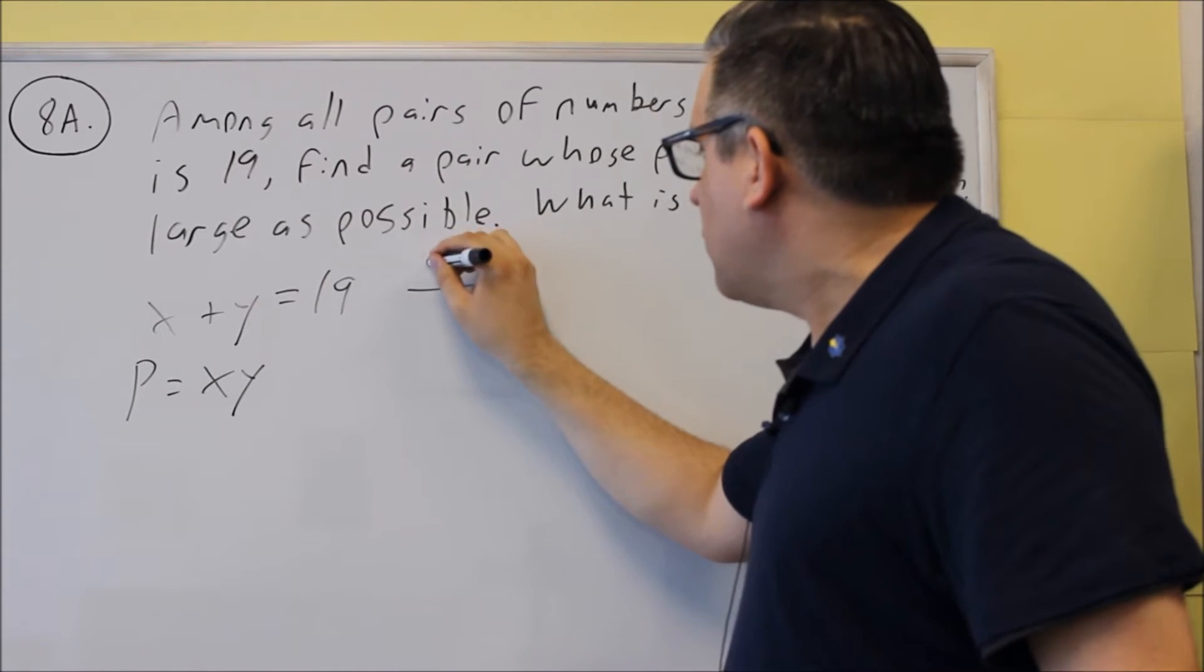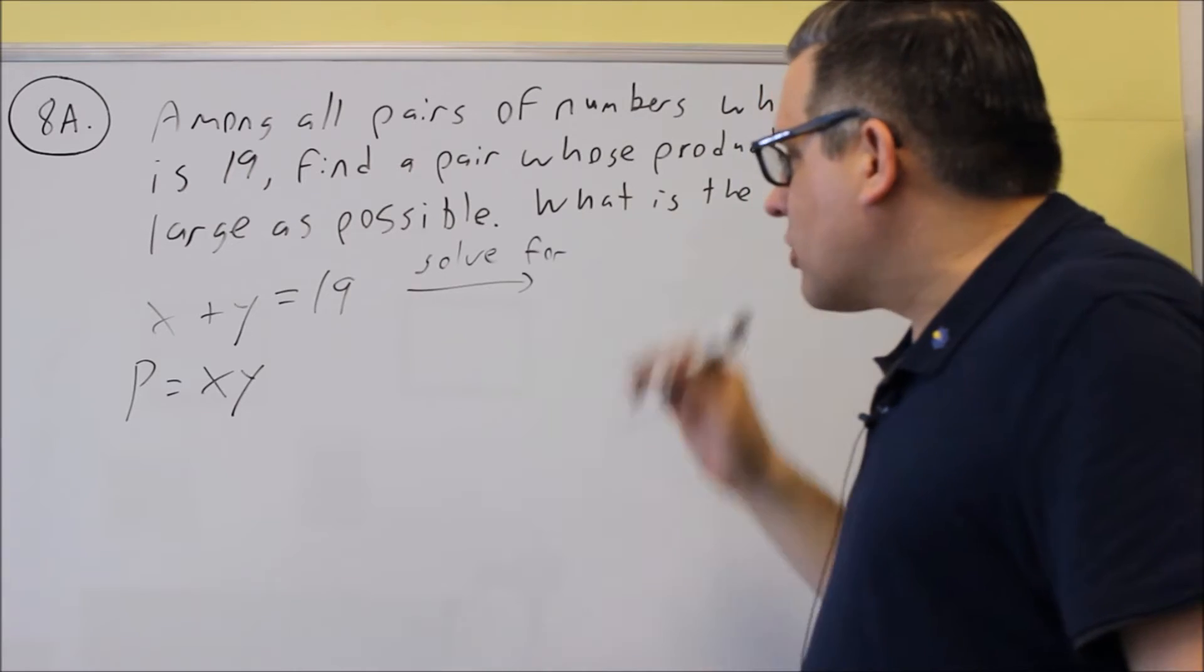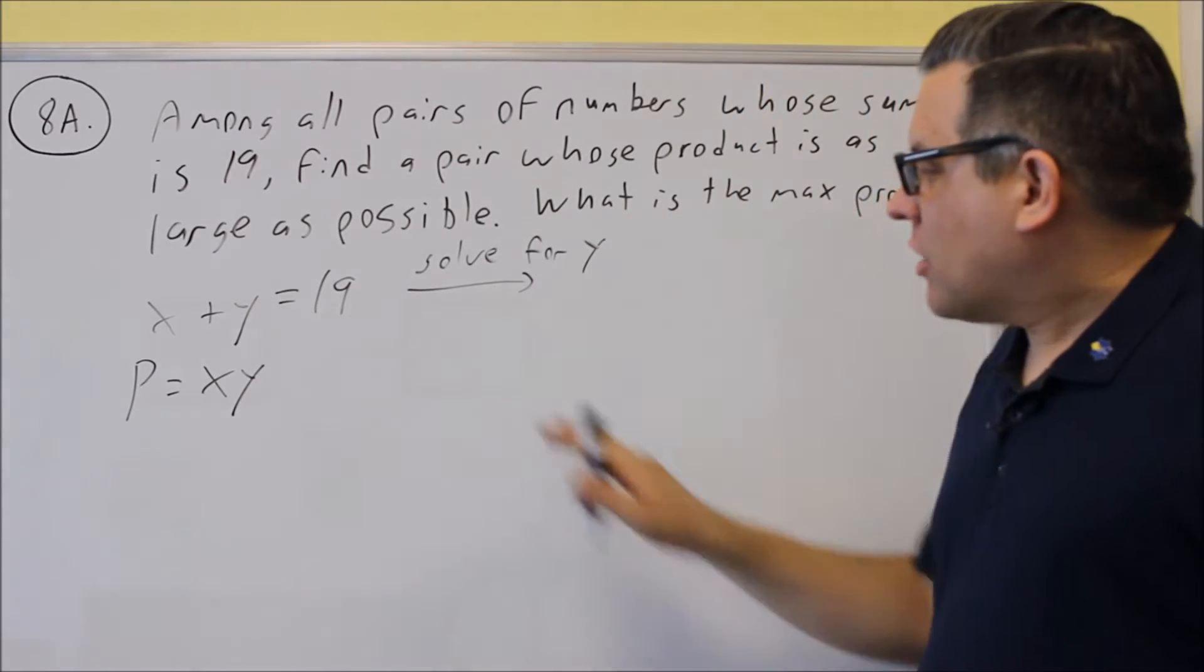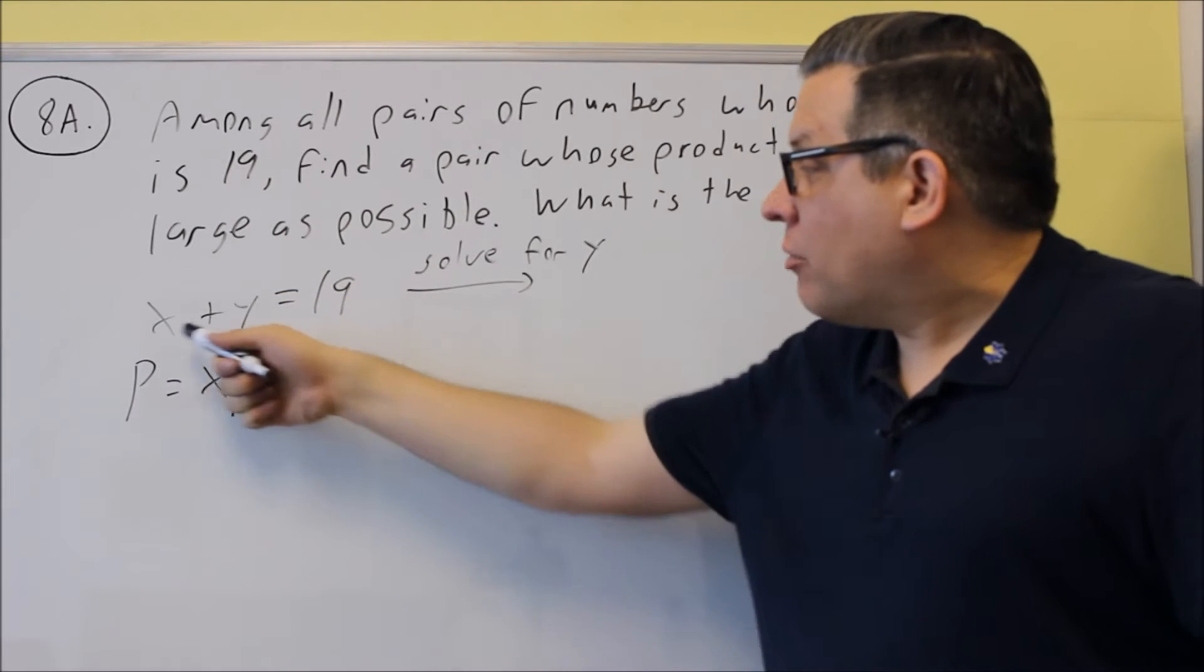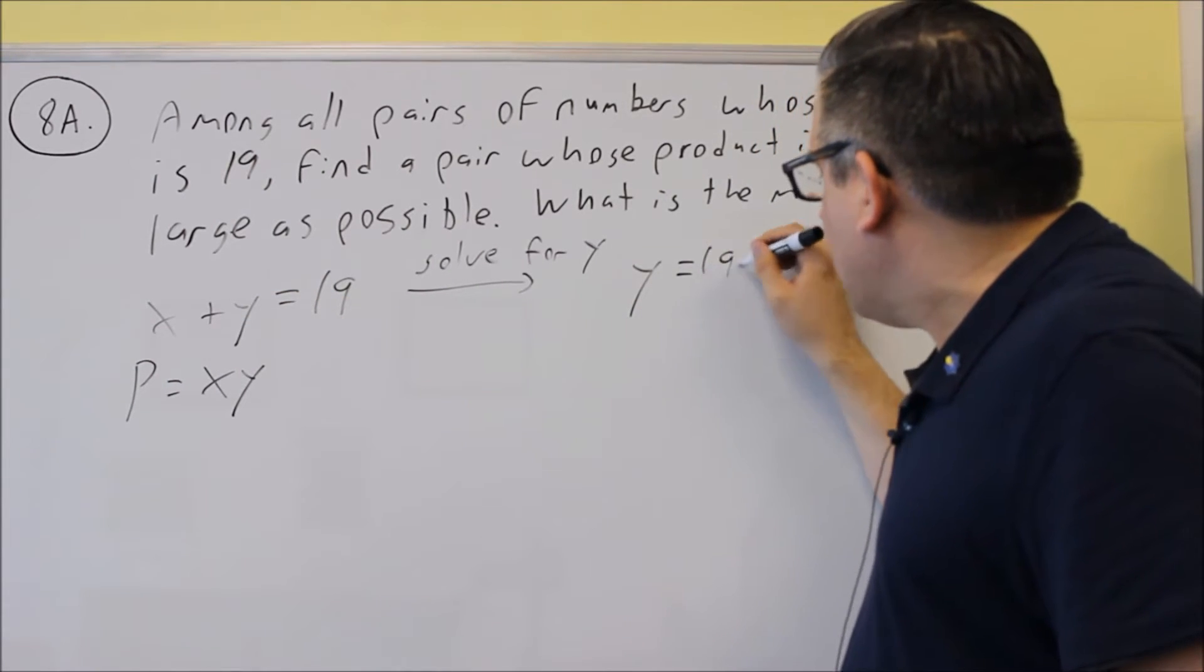I can either solve for x or y. It doesn't matter. In this case, let's go ahead and solve for y. Okay, so if I solve for y with this equation, that means I would subtract x from both sides. That means I would get y equals 19 minus x.